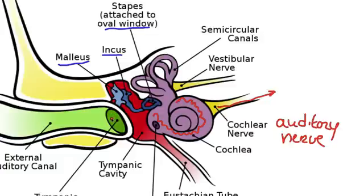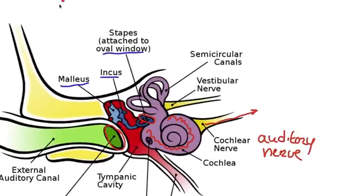Now let's talk about the second way. Here, once again, we have the tympanic membrane, or the eardrum, and here we have the oval window. You will notice something about the size of the two — the tympanic membrane is larger than the oval window. To be more specific, it's approximately 18.6 times larger.